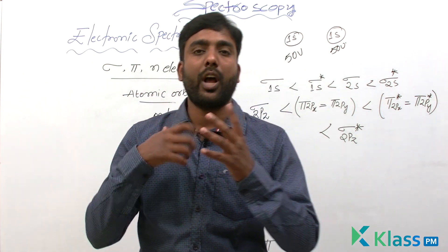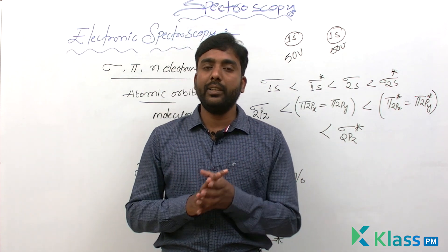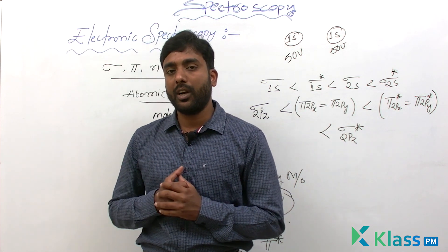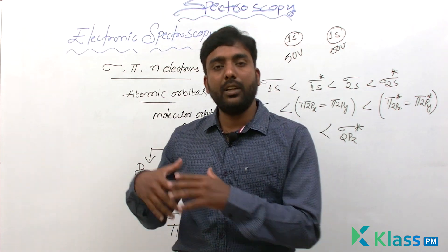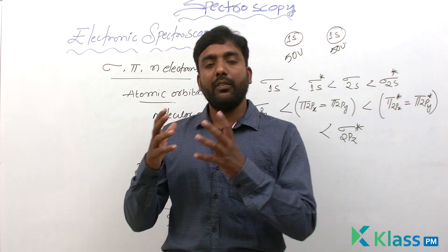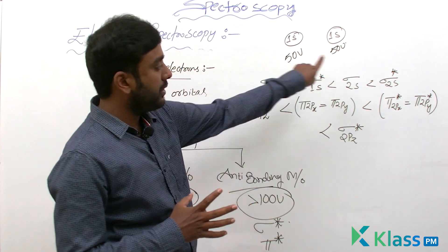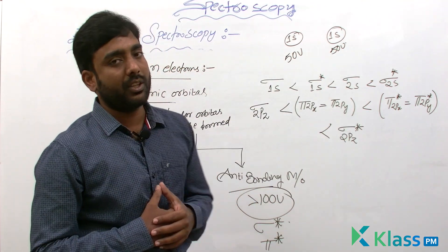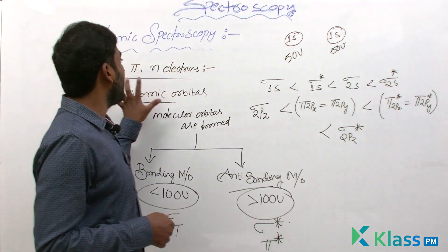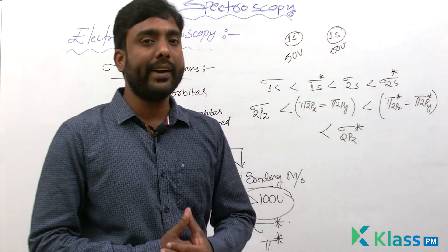To summarize molecular orbital theory: when atomic orbitals of the same energy combine, 50% form bonding molecular orbitals with less energy than the combined atomic orbitals, and 50% form anti-bonding molecular orbitals with greater energy. In the next class, we will discuss electron transitions of sigma, pi, and non-bonding electrons.